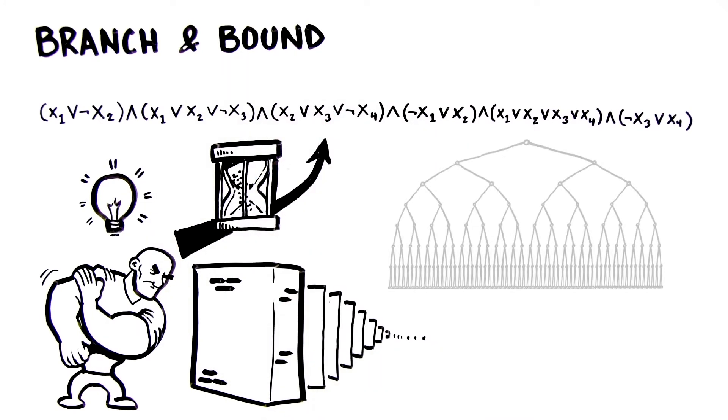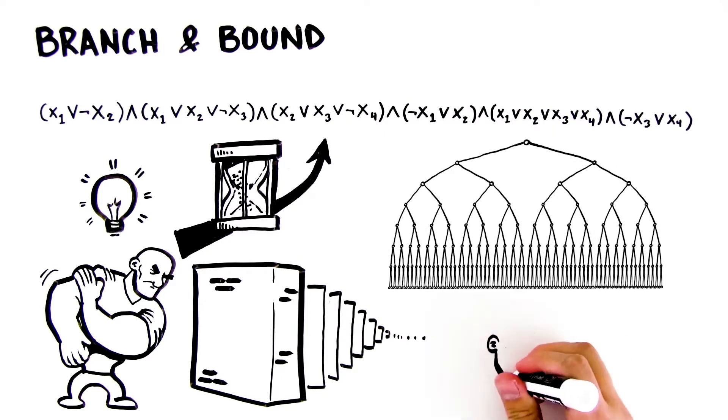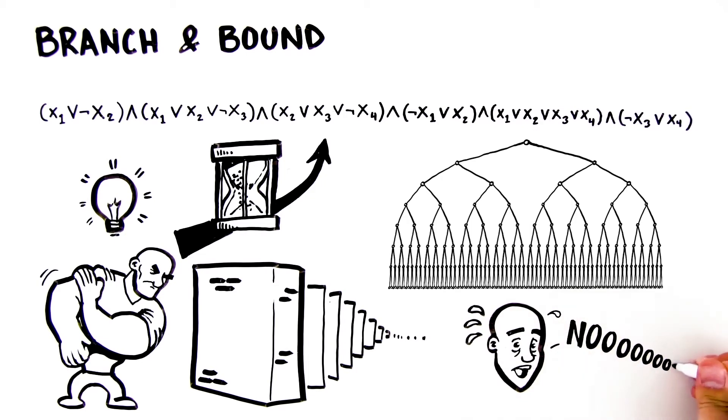For example, let's look at a slightly larger tree with eight variables. Imagine how many steps are required to find the solution to this problem using the branch-and-bound approach.